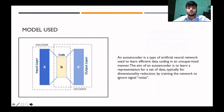Model used: I have used an autoencoder. An autoencoder is a type of artificial neural network used to learn efficient data coding in an unsupervised manner. The aim of an autoencoder is to learn a representation of a set of data, typically for dimensional reduction, by training the network to ignore the signal noise.